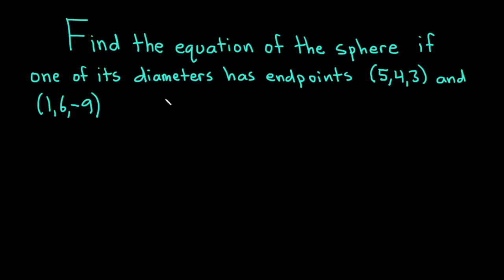In this video, we're going to find the equation of the sphere if one of its diameters has endpoints (5, 4, 3) and (1, 6, -9). Let's go ahead and carefully work through this solution.